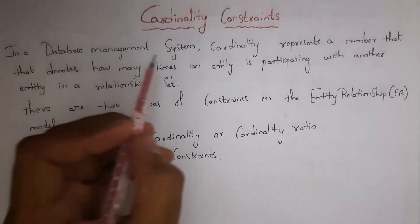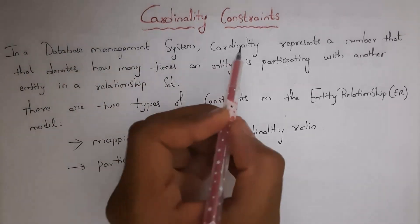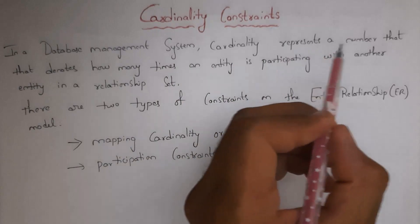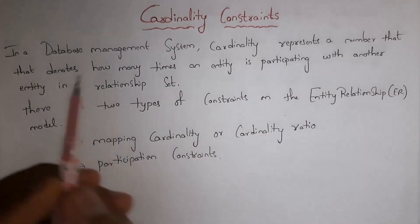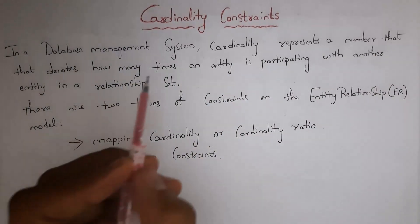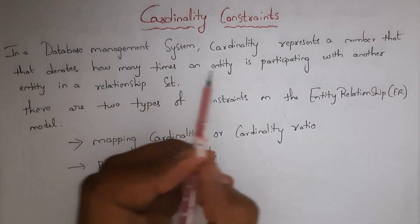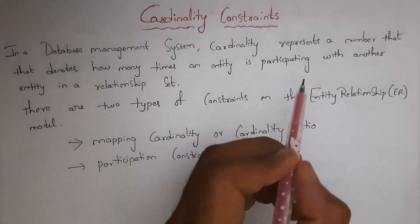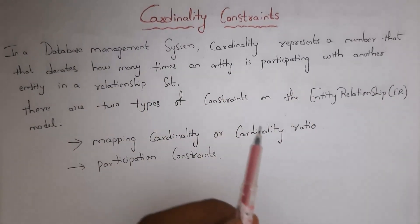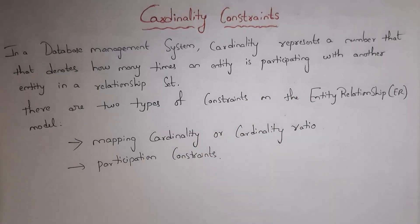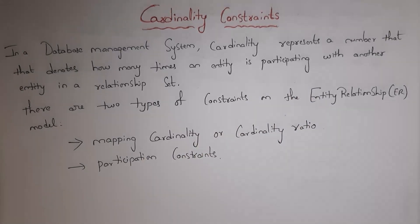In a database management system, cardinality represents a number that denotes how many times an entity is participating with another entity in a relationship set. I will give an example so that you can clearly understand this definition.